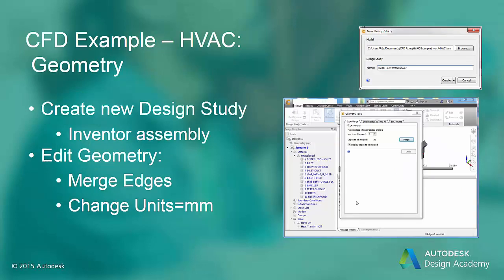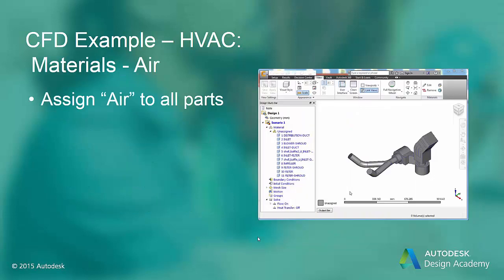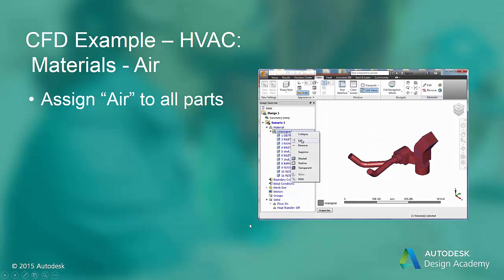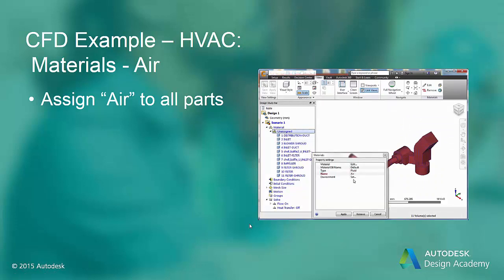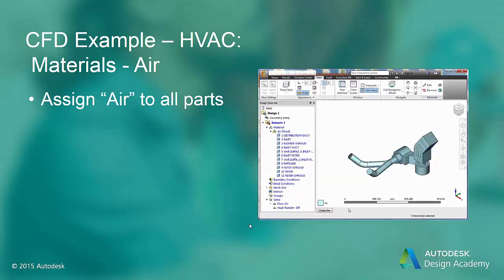An Inventor assembly named HVAC.IAM has already been created. As in previous CFD simulations, we will merge the small edges in this model and use the millimeter system of units. Since most of the parts in the HVAC assembly are air parts, we begin by assigning air to every part in the assembly model. One important note about distributed resistance macro models is that they need to be surrounded by air or fluid parts in order for the software to recognize them.